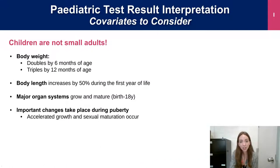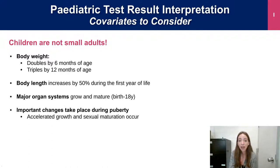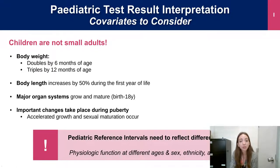There are various covariates to consider in pediatric test result interpretation. The CALIPR team here at SickKids likes to say children are not small adults. Indeed, several physiological processes occur throughout growth and development, including body weight doubling by six months and tripling by 12 months, body length increasing 50% in the first year of life, and major organ systems growing and maturing from birth to adolescence, including sexual maturation that impacts pediatric biochemistry. Therefore, pediatric reference intervals need to reflect differences in physiological function at different ages, sex, ethnicity, and BMI.